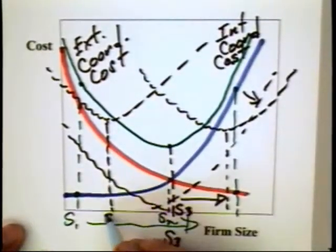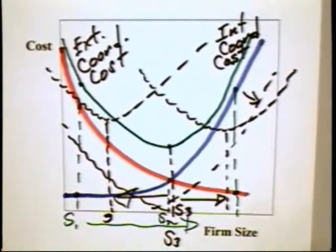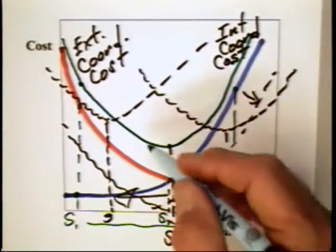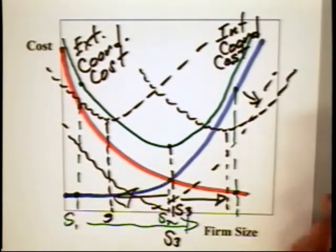The net result is that the size of the firm contracts. In this case, the size of the firm goes down because of forces outside of the firm. Sometimes we think that firms contract only because they are doing poorly. But it could very well be that they are just taking advantage of improvements in market transactions.